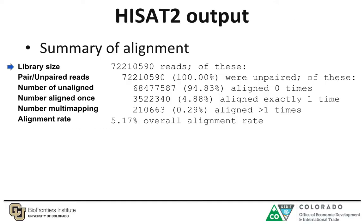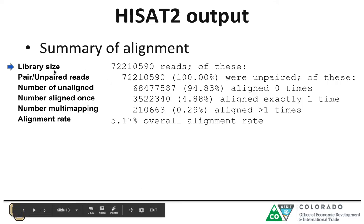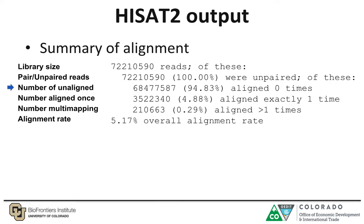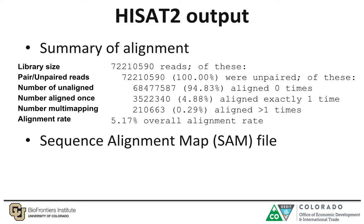The output from HISAT2 gives you a summary of your alignment. It will give you the average size of your library, the library size, whether your reads were paired or unpaired and how many, the number of unaligned reads, the number of reads aligned only once, and the number of reads aligned to multiple locations. It will also give you the overall alignment rate. Finally, HISAT2 outputs a sequence alignment file, or SAM file — a human-readable, tab-separated file that tells you where your reads mapped to the genome.